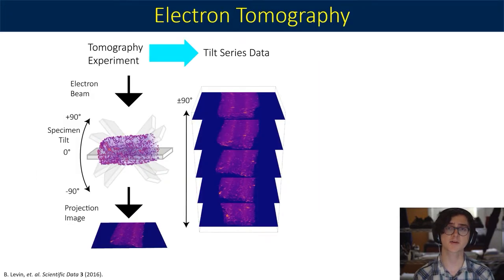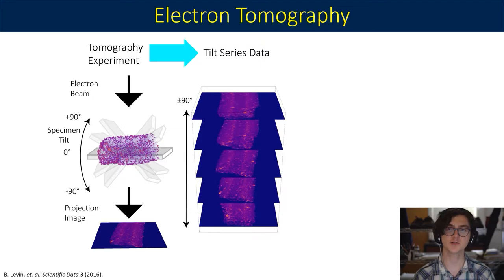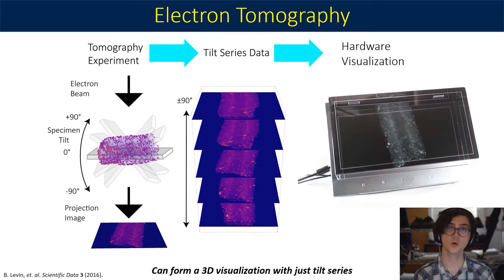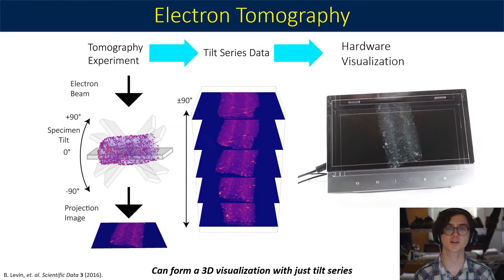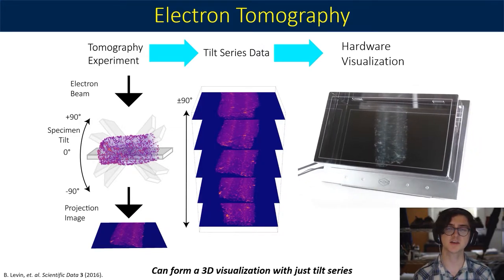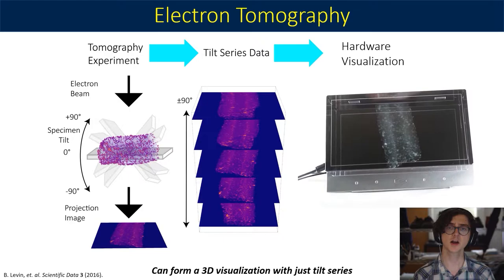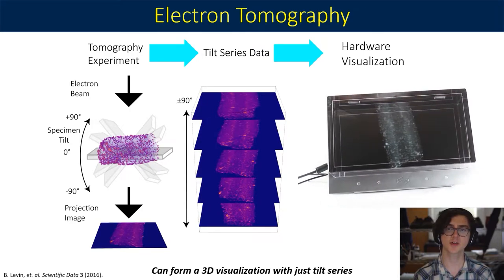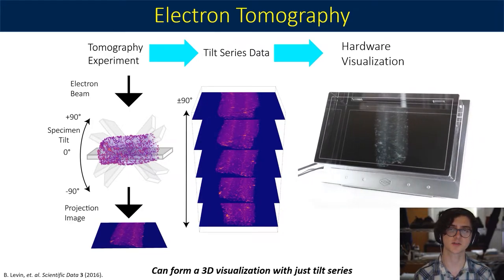To provide brief background, electron tomography is an essential technique for understanding 3D materials. By taking a tilt series of projection images, we're able to take 2D data and turn it into 3D data through a reconstruction process. We do actually have a choice here though. Using a holographic display, we can rapidly re-project the 2D data such that it appears 3D using the hardware, or we can follow the standard tomographic process and enhance it at the end using the display. We'll talk about the second point first for familiarity, but we will return to the hardware visualization technique later in this talk.